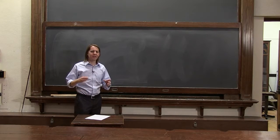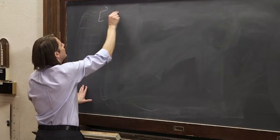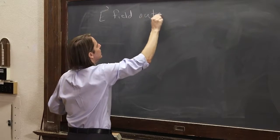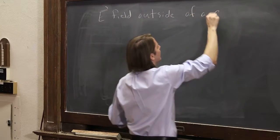So we've thought about the electric field inside a conductor. It's always zero. Now let's look at the electric field outside of a conductor.